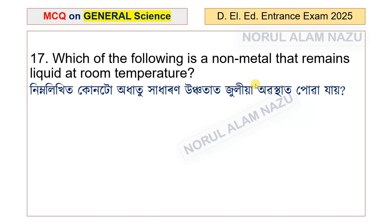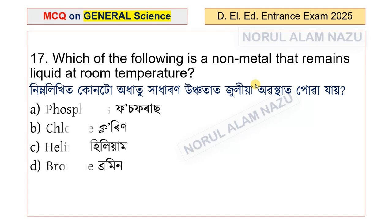Question number 17: Which of the following is a non-metal that remains liquid at room temperature? The options are phosphorus, chlorine, helium, and bromine. Bromine is the non-metal that remains liquid at room temperature.